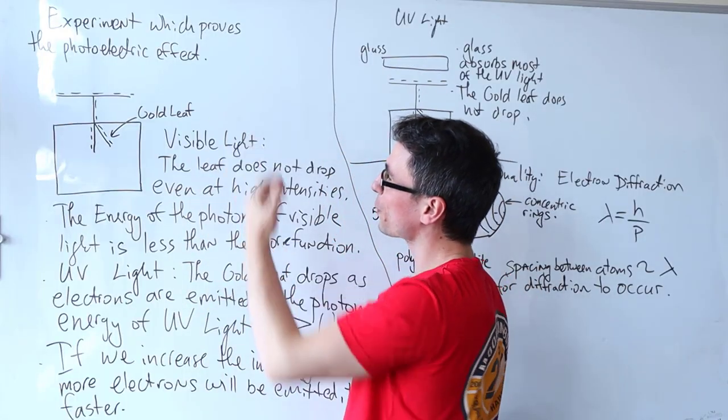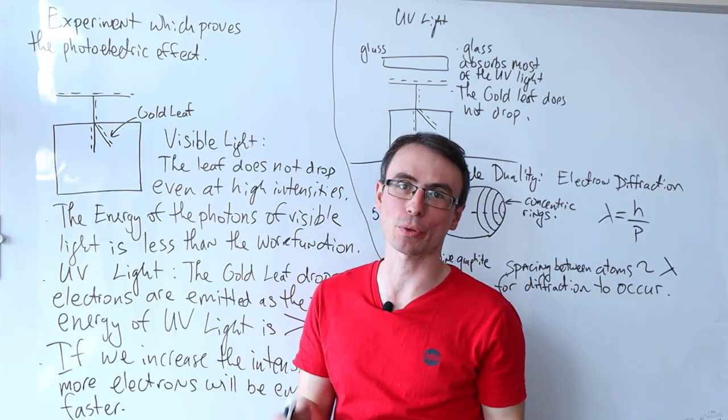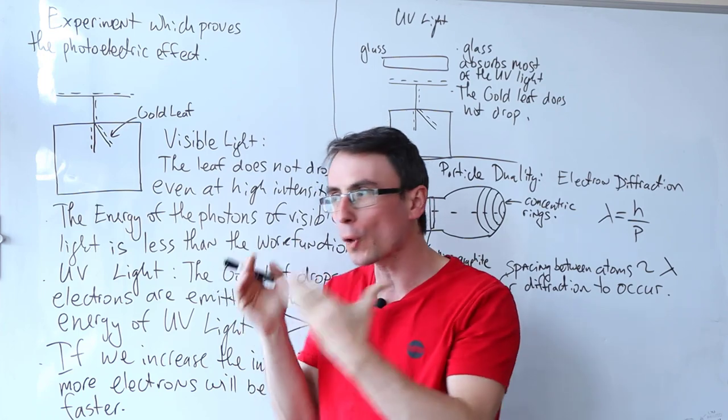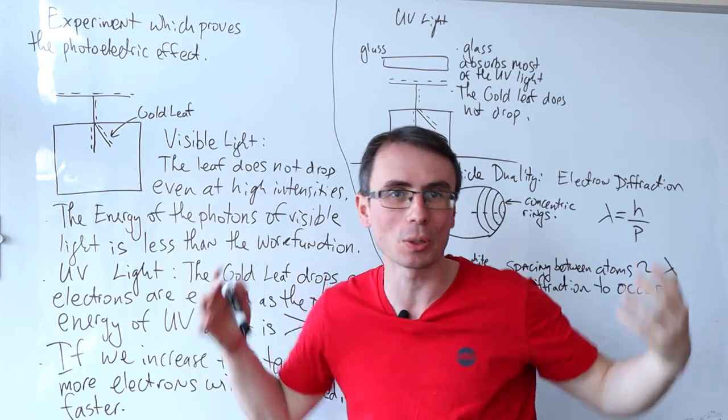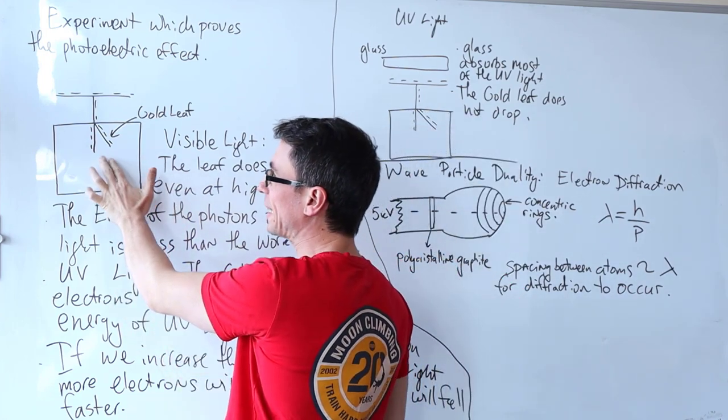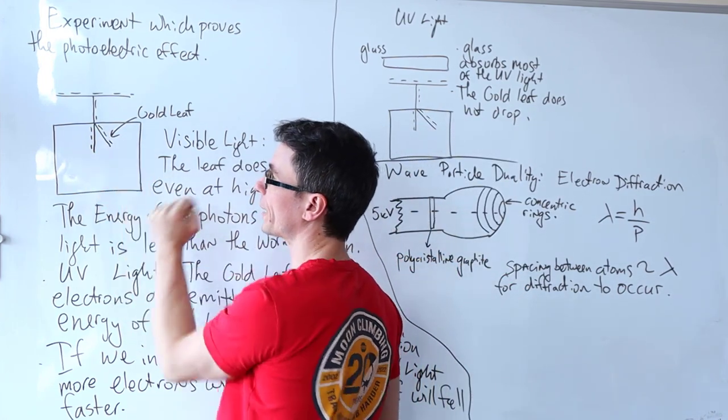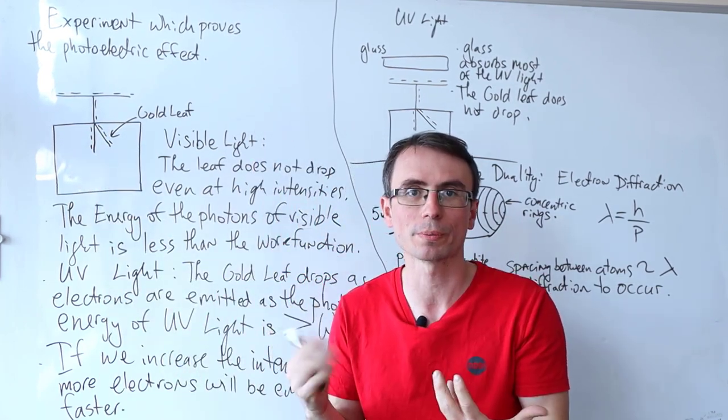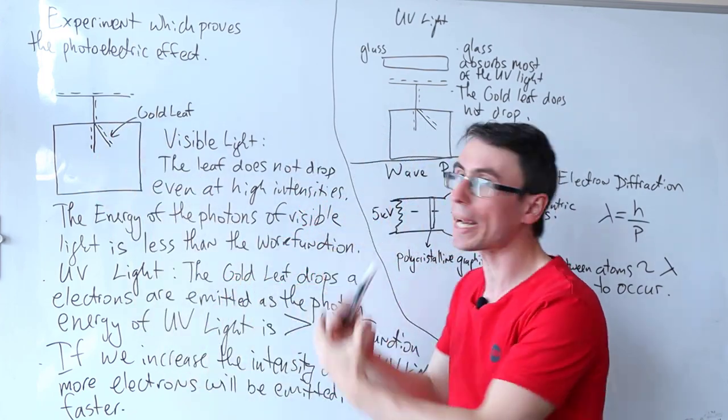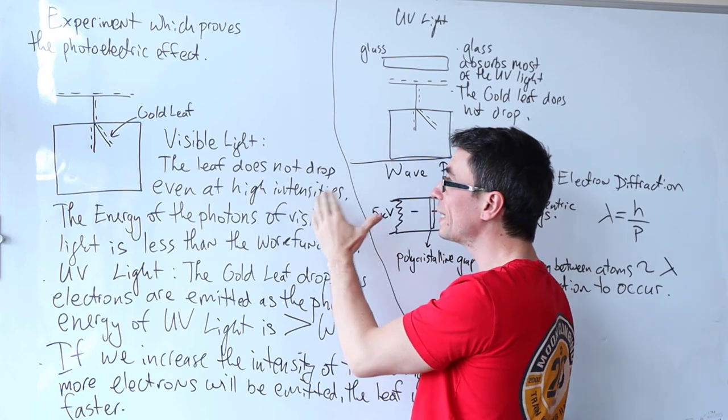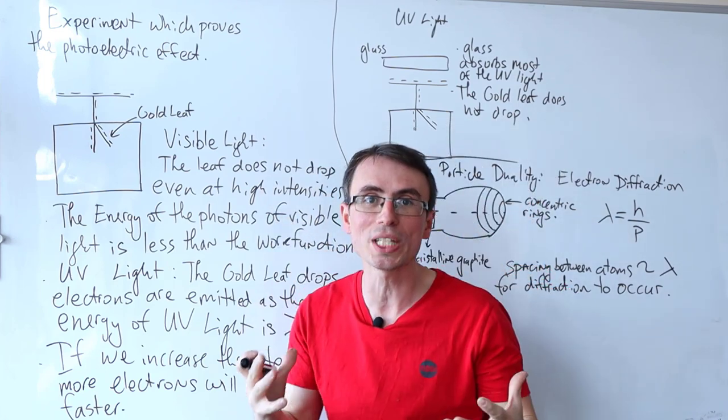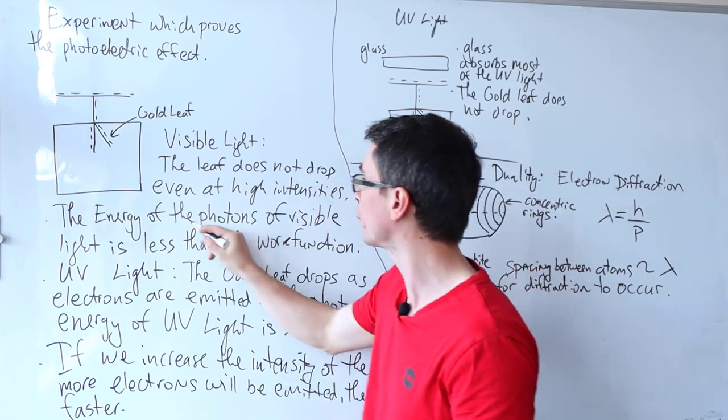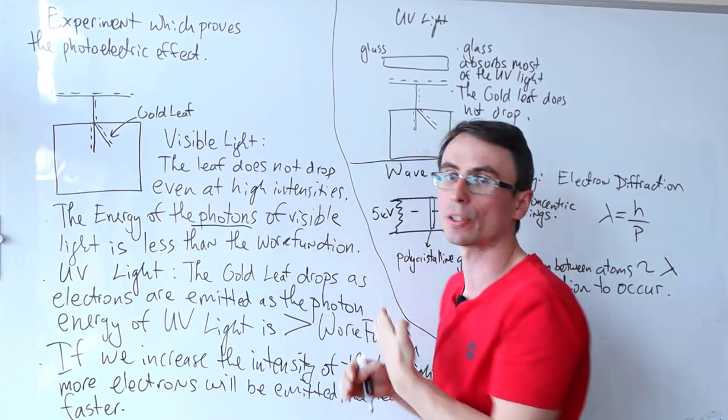The classic experiment which proves the photoelectric effect is the gold leaf electroscope. We introduce some charge to this electroscope. This could be done by charging up a rod and making some contact, or it could be done with an electrical circuit. What then happens is that this gold leaf will rise because it will acquire a negative charge and this part here has a negative charge, so they experience electrical force. If we were to shine some visible light onto this arrangement, the gold leaf will not drop even at some really high intensities. That is because the energy of the photons of the visible light is less than the work function.